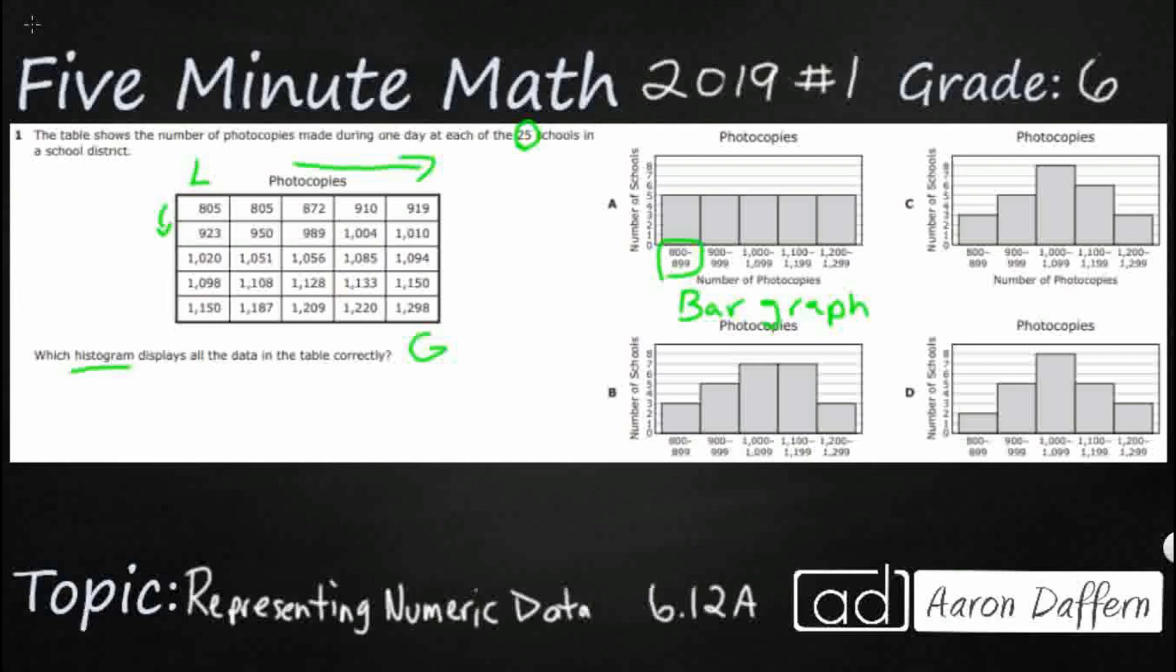This first bar on A, 800 to 899, represents the number of times the value anywhere from 800 to 899 showed up. In a true bar graph, each bar represents one value. In a histogram, each bar represents a range or a bucket of values. Other than that, they work exactly the same.